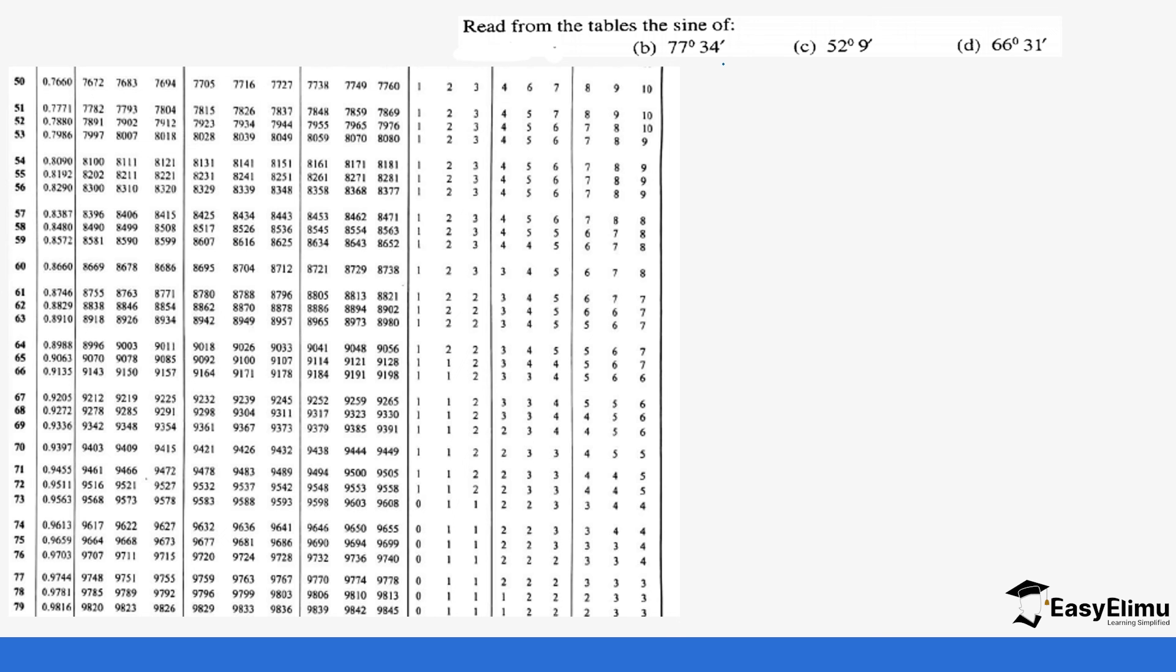You can be given a question with minutes. For 77 degrees and 34 minutes, we convert 34 minutes into degrees. One degree equals 60 minutes, so 34 divided by 60 gives us 0.57. That means our value is 77.57 degrees. We go to 77.5 which gives us 0.9763, and then the last column is 7, which gives us an addition of 2. So it is 0.9765.